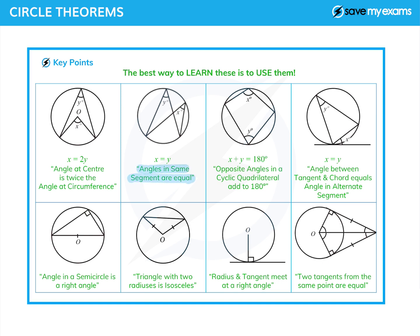What's a segment? If I join those two points, the segment is the thing above the line — and the little one below the line — and any angle I draw in that segment are equal, so x equals y. If we have a cyclic quadrilateral, then the opposite angles add up to 180.